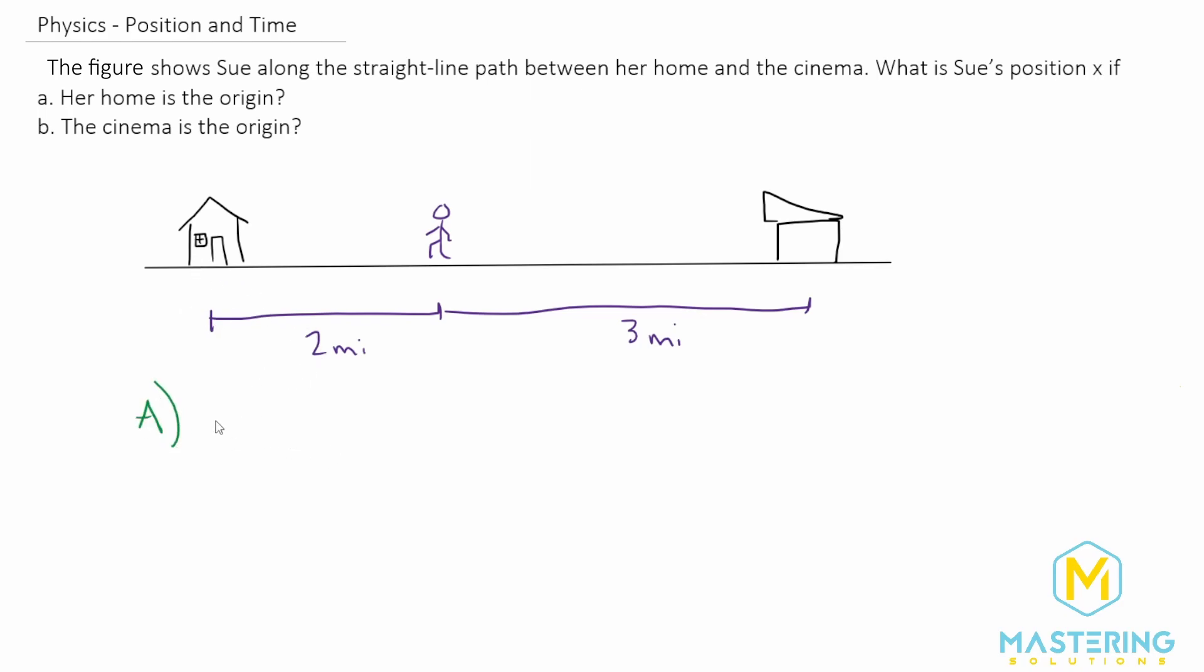So what we're going to do is we're going to draw a number line. So the origin at her house is zero. Right here will be one mile and Sue is at two miles. So if her house is the origin, her position is in the positive x direction. So it is a positive two miles.